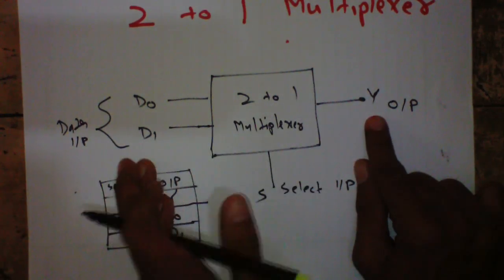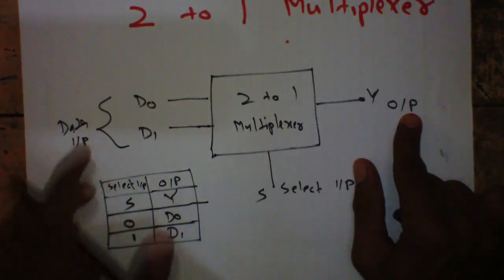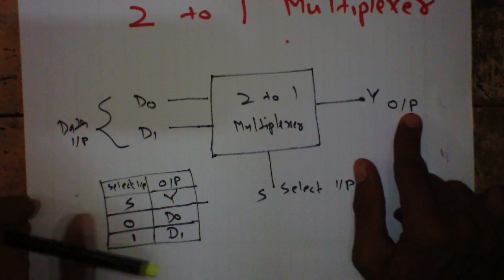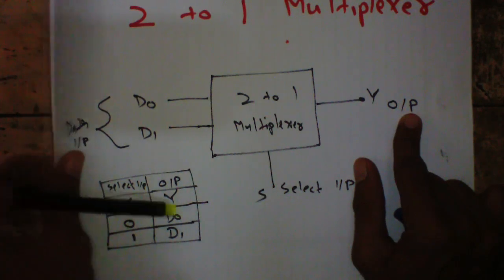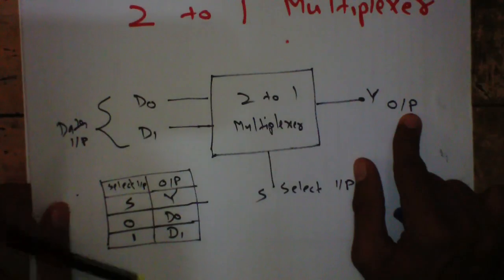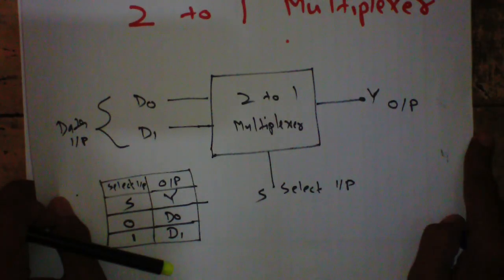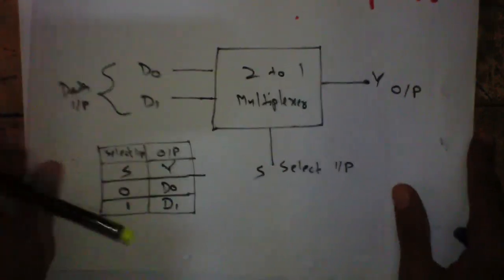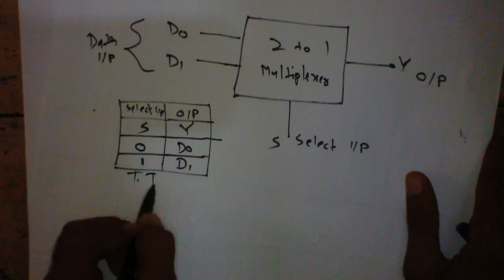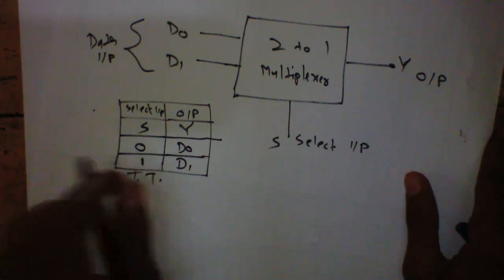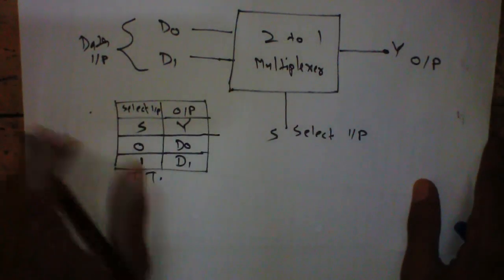It will directly forward D1 to Y if S is 1, and vice versa. Now, to clarify this, let's design the logical circuit of the 2-to-1 multiplexer. From the truth table, let's design the logical circuit. We have one select input S, and S can be 0 or 1.